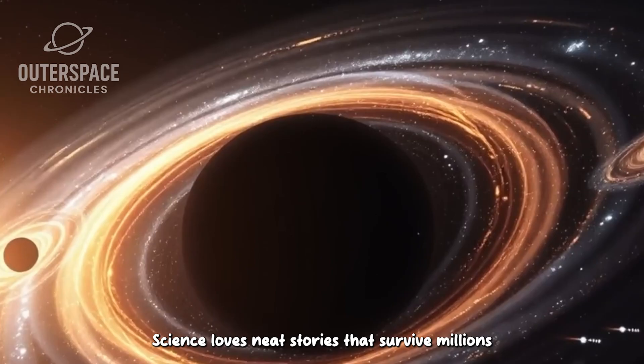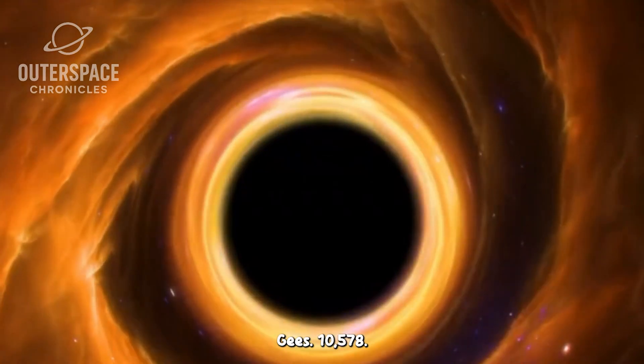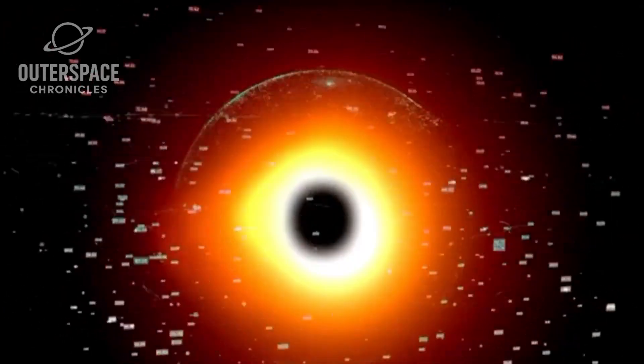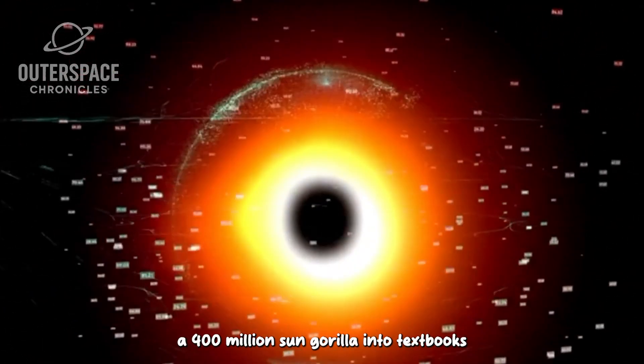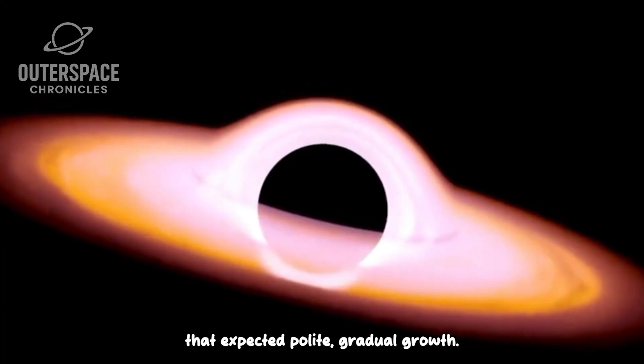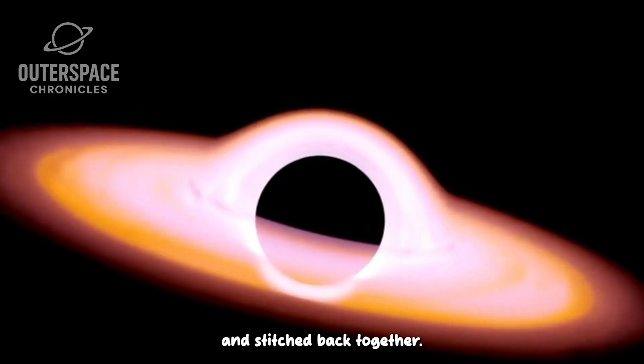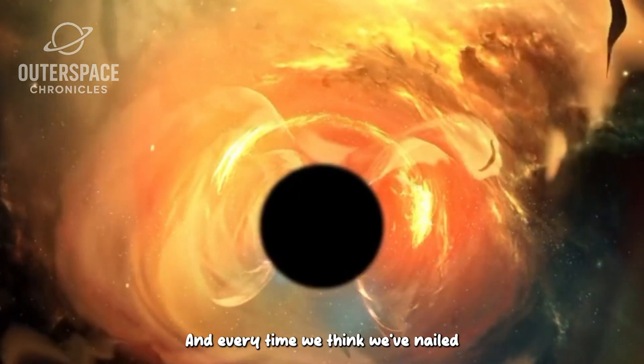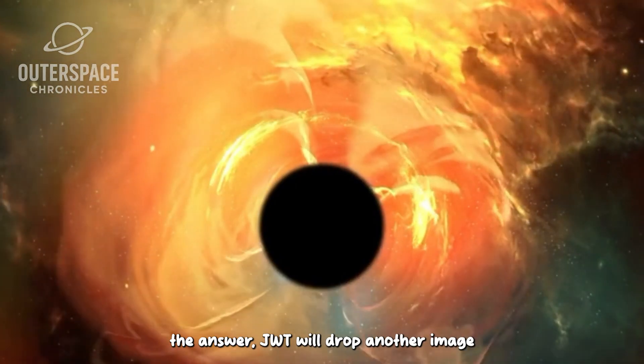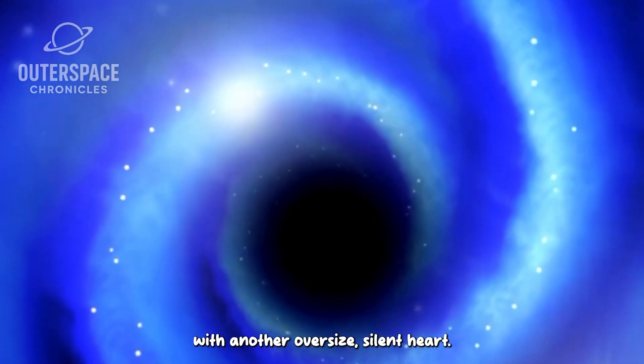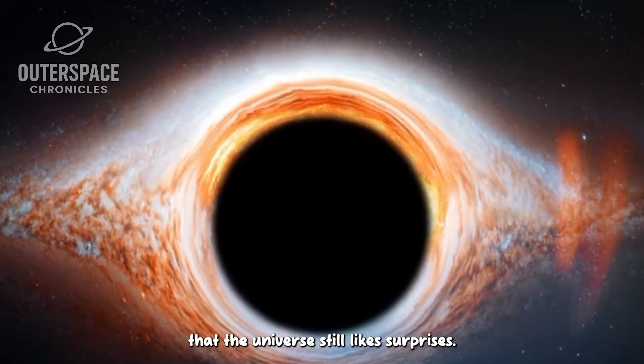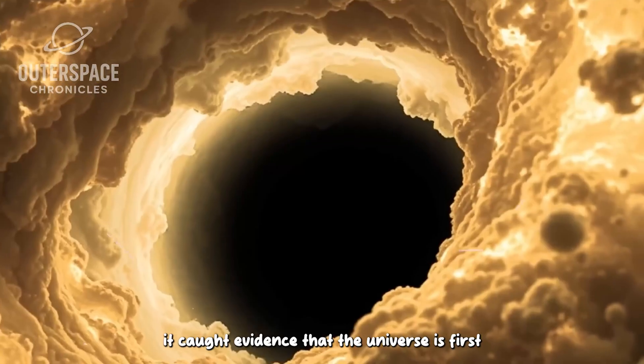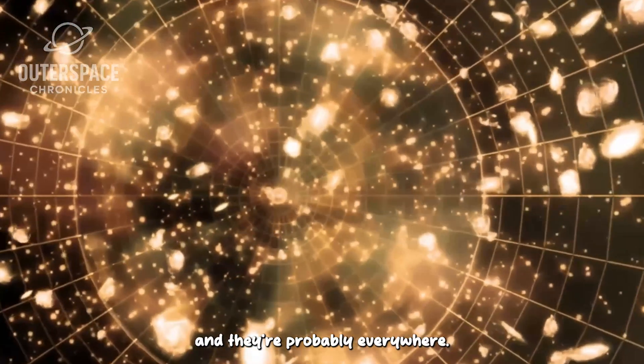Science loves neat stories that survive millions of tests. GS 10578's black hole is the kid who walks in and proves the equation on the board is wrong. Cosmologists now have to shoehorn a 400 million sun gorilla into textbooks that expected polite, gradual growth. Simulations will be torn apart and stitched back together. Observation plans will pivot. Funding proposals will get stamped urgent. And every time we think we've nailed the answer, JWST will drop another image with another oversized silent heart. The pain is the thrill, and the promise that the universe still likes surprises. So JWST didn't just bag a big black hole. It caught evidence that the universe's first draft was sketched by giants we never accounted for, and they're probably everywhere.